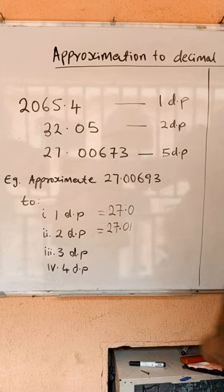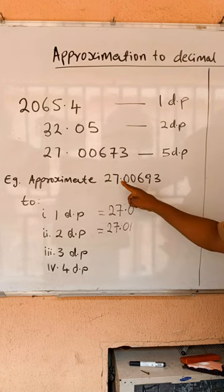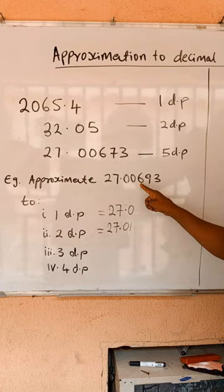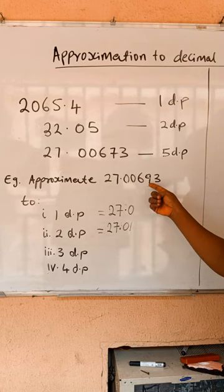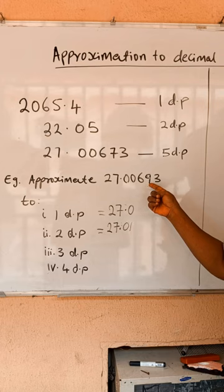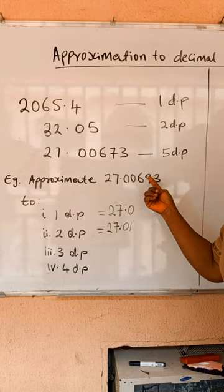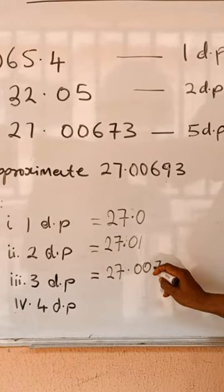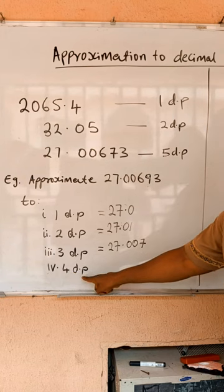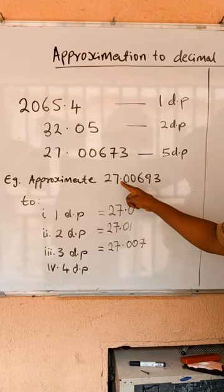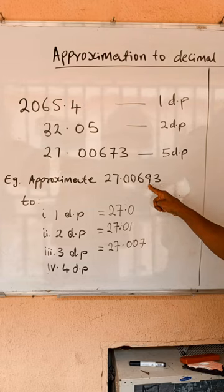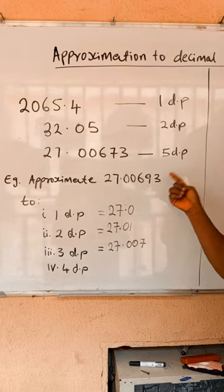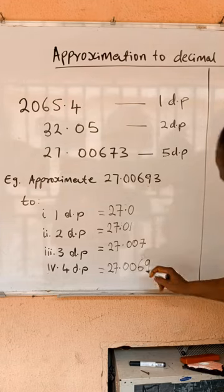For three decimal places, you count one, two, three. The next digit is nine — it is up to five — so you round it up by adding one to the preceding digit. For four decimal places, you count one, two, three, four. The next digit is three — it is not up to five — so you leave the figure as it is.